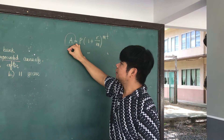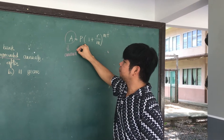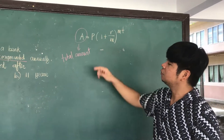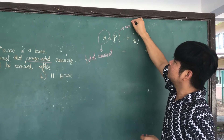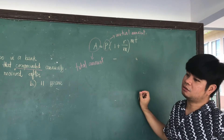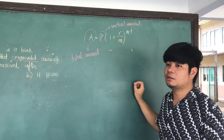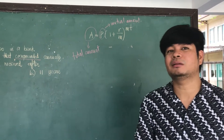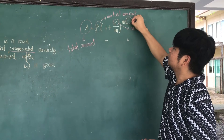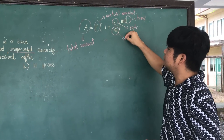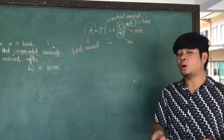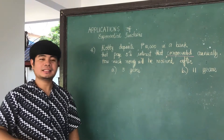The formula for compound interest is: total amount A equals principal P times (1 plus r over n) raised to n times t. P is the initial amount deposited or borrowed. R is the rate. T is time. N is the frequency of compounding — whether semi-annually, monthly, annually, or quarterly.